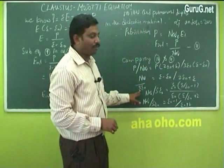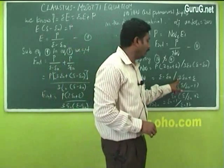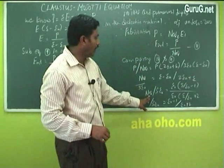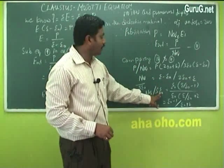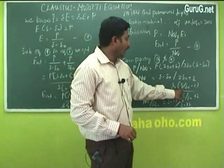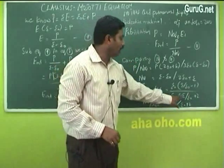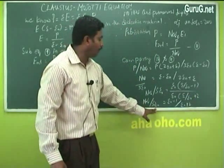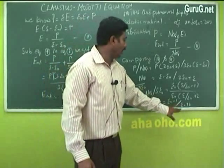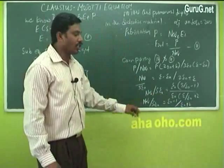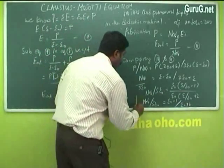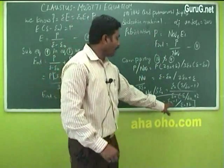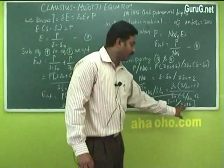Comparing the two expressions, N·α / (3ε₀) = (ε - ε₀) / (2ε₀ + ε). On further simplifying by dividing numerator and denominator by ε₀: N·α / (3ε₀) = (ε_r - 1) / (ε_r + 2). This is called the Clausius-Mossotti relation.